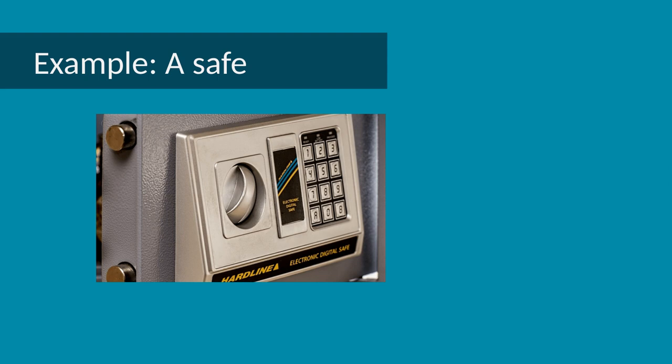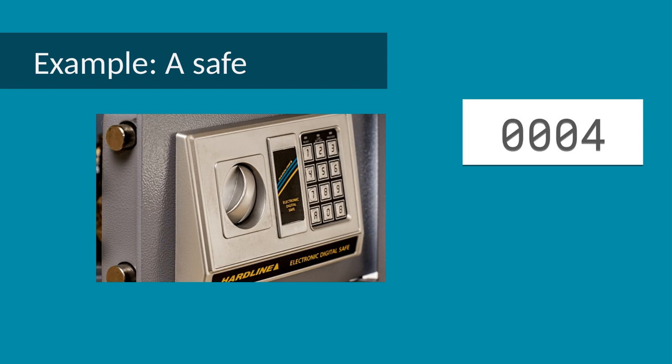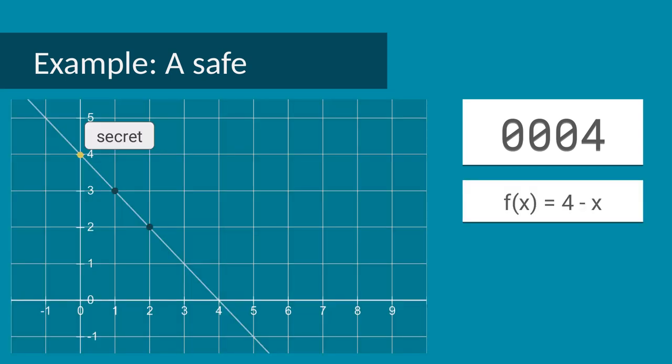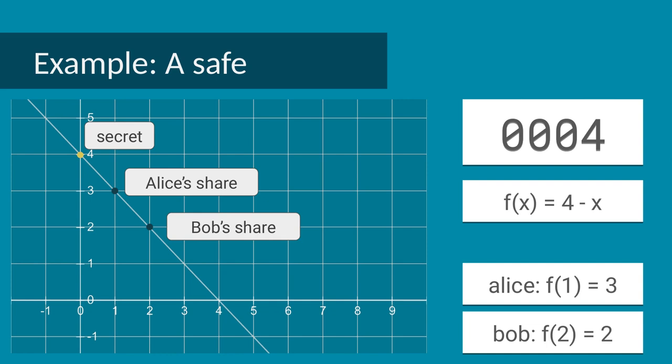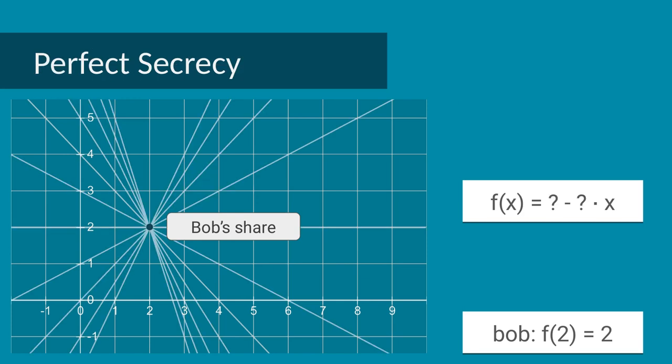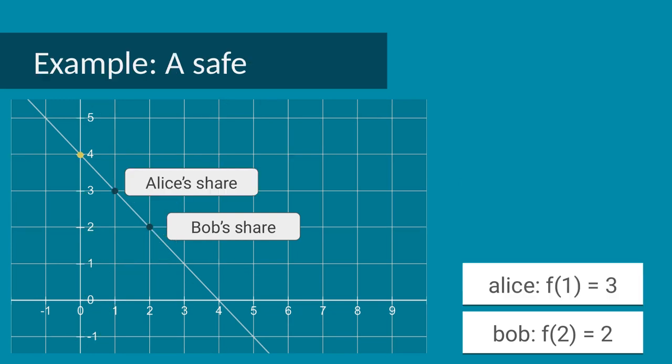We can use this to share a secret value. Suppose I have a safe with keypad lock, and the secret code is 4. I pick a random straight line through the number 4 on the y-axis, for example f(x) = 4 - x, and keep this formula to myself. I tell my two friends Alice and Bob each one point on the line. Alice learns f(1) = 3, and Bob learns f(2) = 2. If Bob only knows his own point, or his share of the secret, every code is equally likely because there's always a straight line passing through the y-axis value and Bob's point. This is perfect secrecy. Bob learns nothing about the possible secret value.